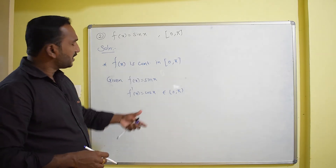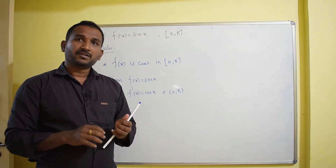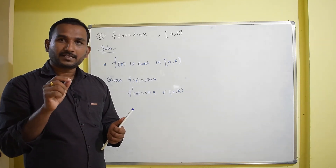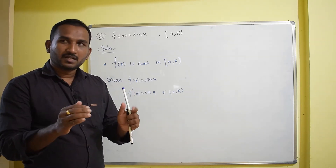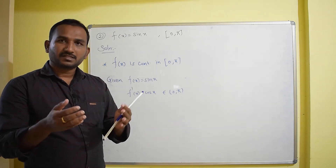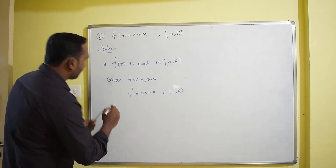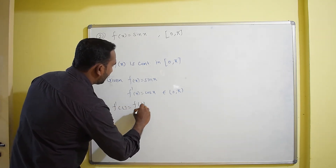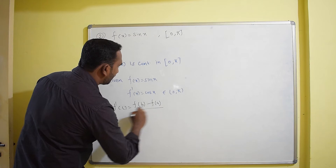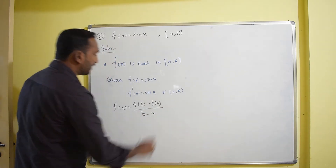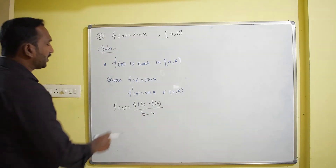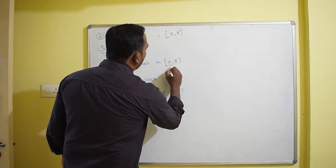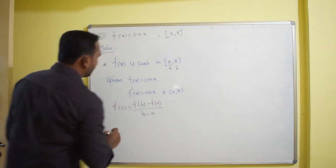Since both conditions are satisfied, there exists at least one value c in the open interval (0, π) — or in general (a, b) — such that f'(c) = [f(b) − f(a)] / (b − a). Here a = 0 and b = π.